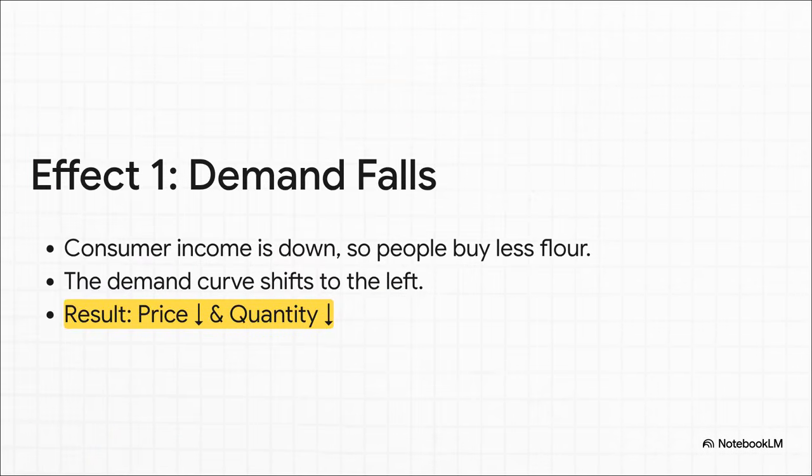So the logic here is pretty straightforward, right? Less money in people's pockets means they're not buying as much flour, no matter the price. On a graph, that means the whole demand curve shifts inward, to the left. And the result of that shift, all by itself, is that both the price of flour and the total amount sold are going to fall.